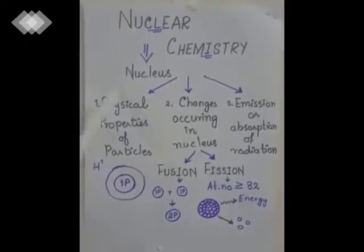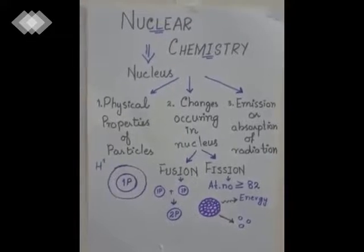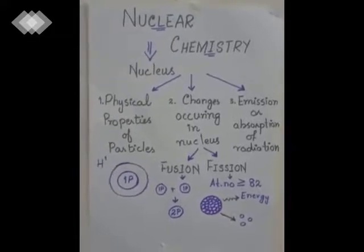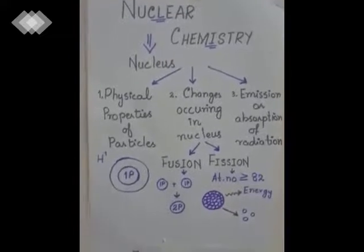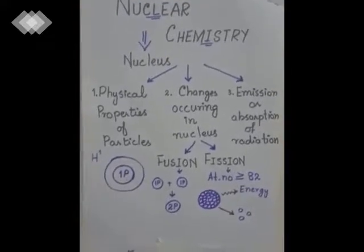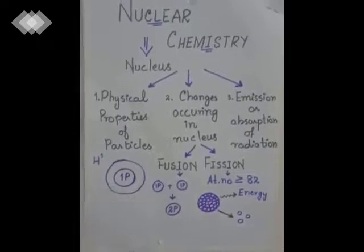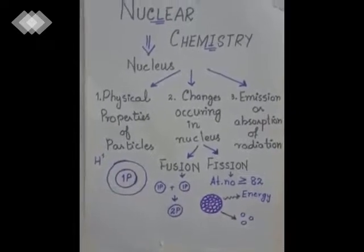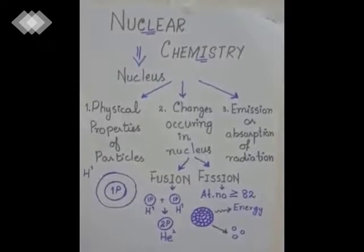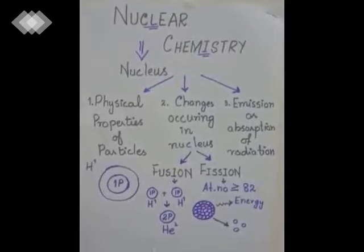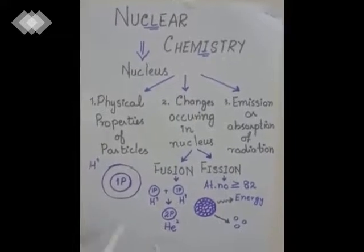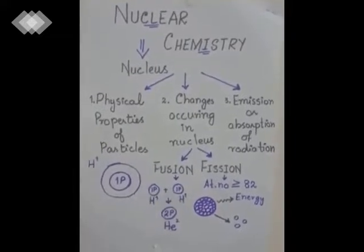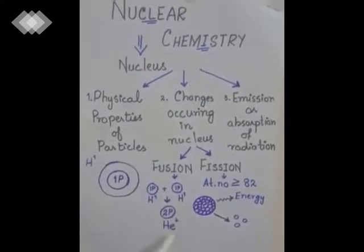The second topic is changes occurring in the nucleus, explained through fusion and fission. Fusion means combination, while fission means breakdown. For example, fusion explains why the sun gives off heat — because two nuclei of hydrogen atoms combine together and form the nucleus of helium.